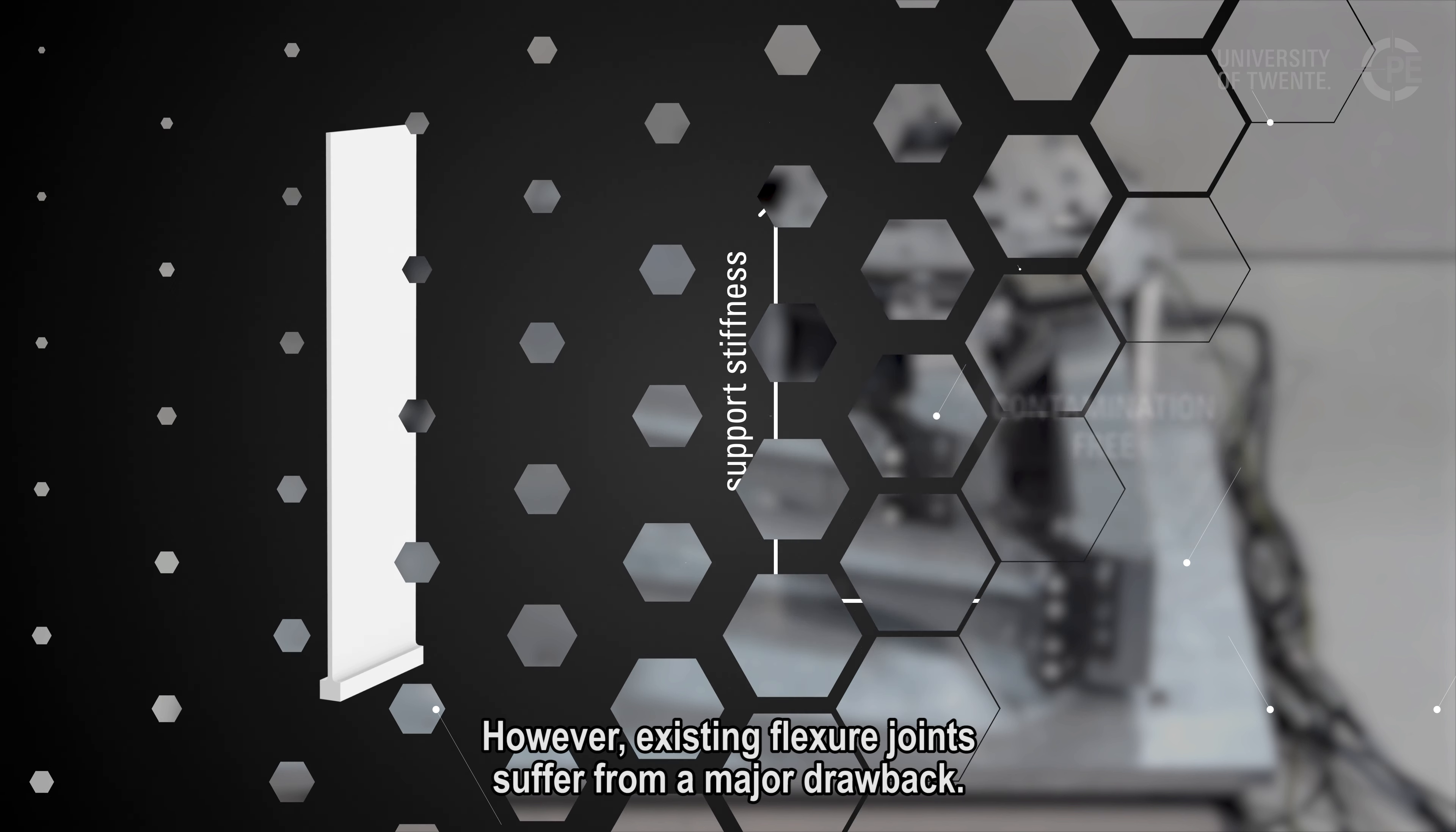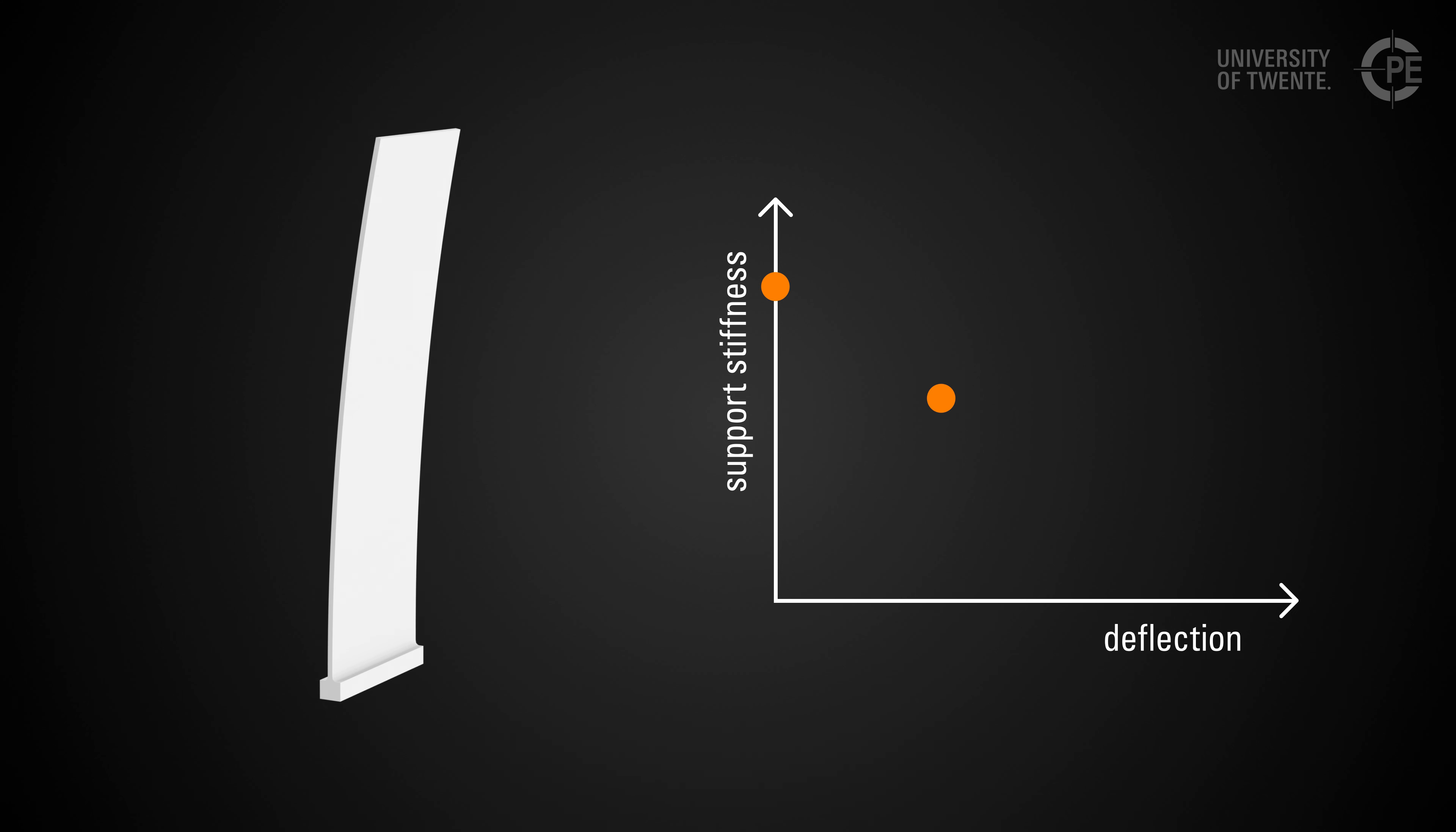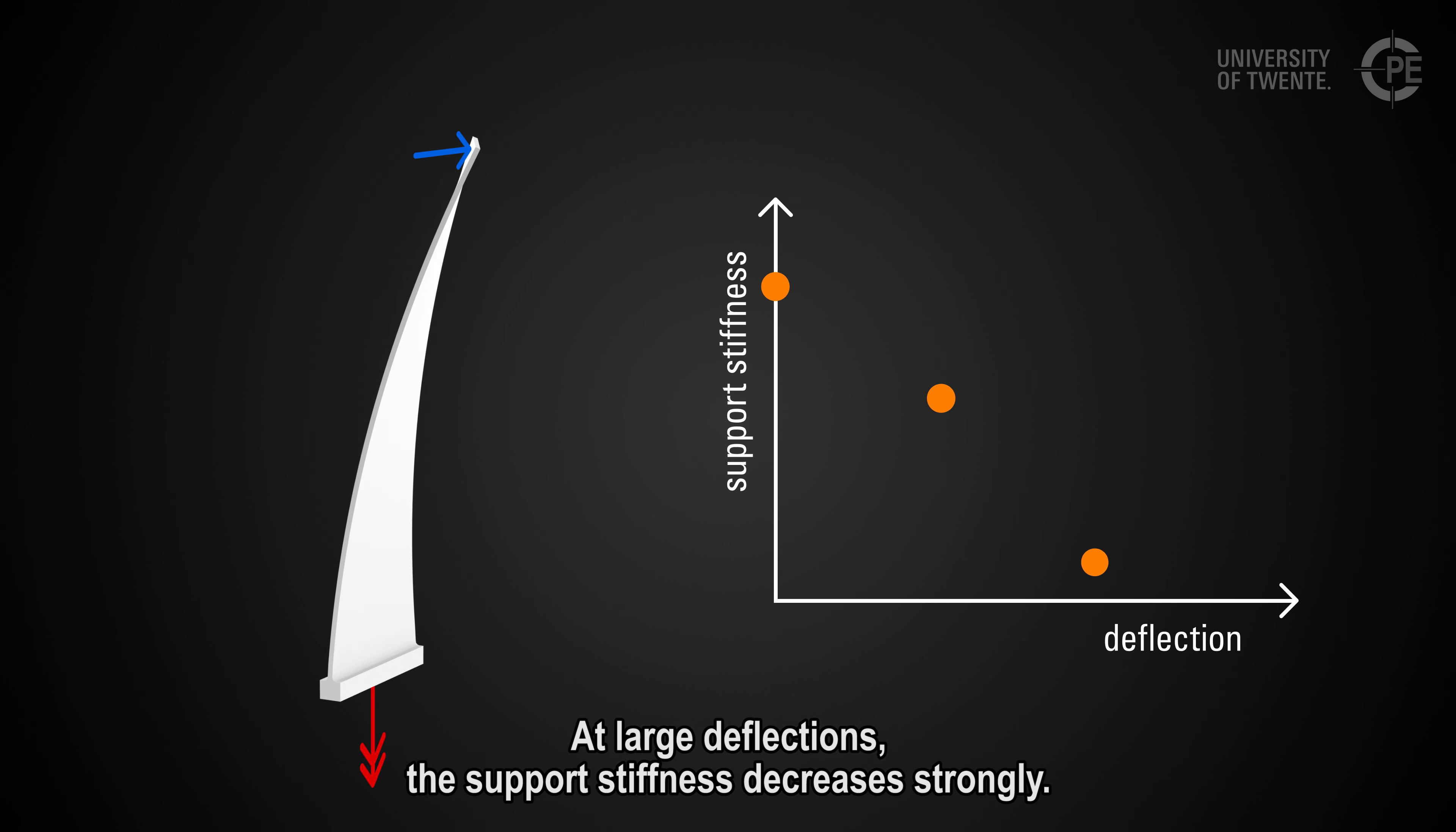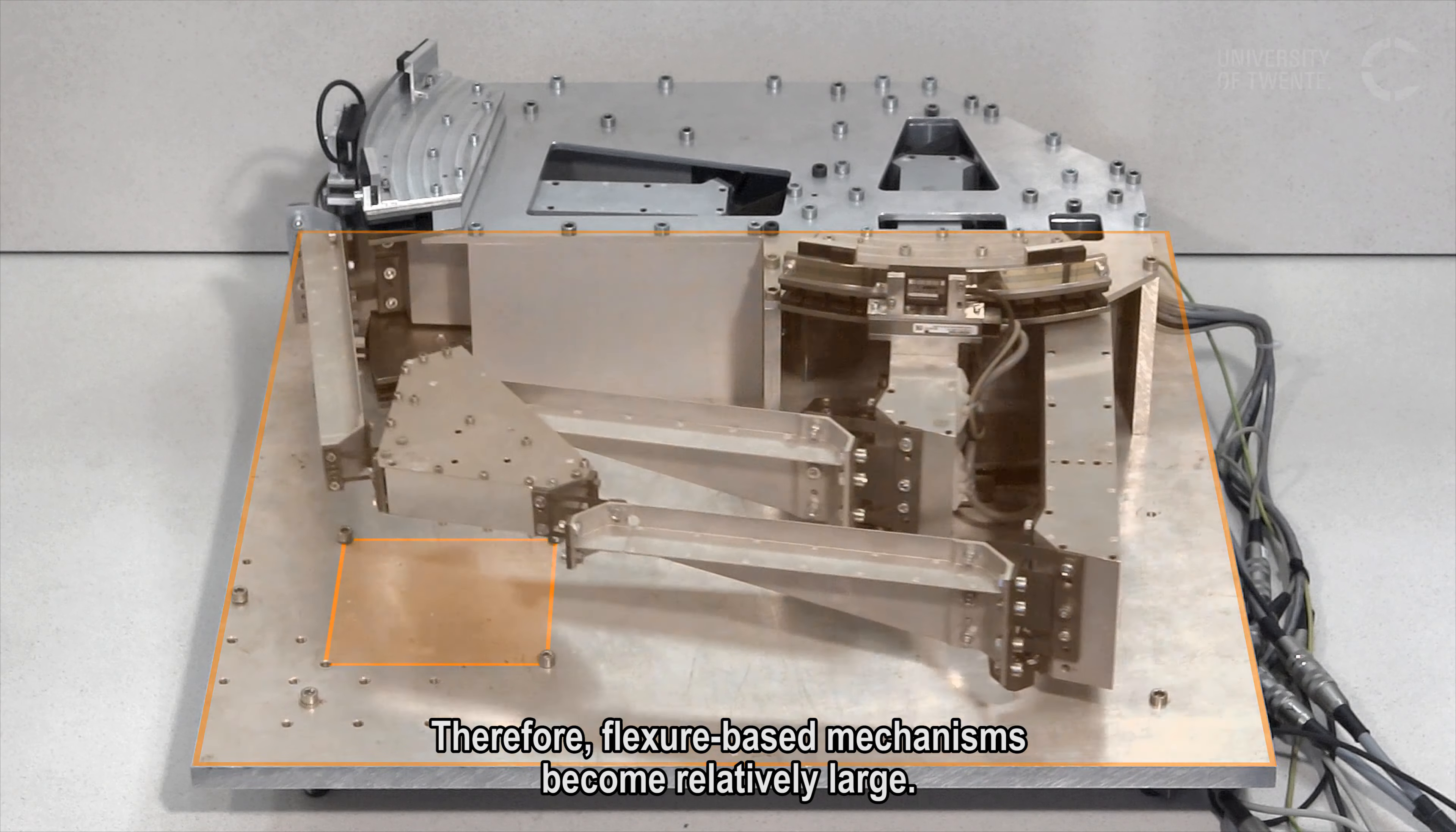However, existing flexure joints suffer from a major drawback. At large deflections, the support stiffness decreases strongly. Therefore, flexure-based mechanisms become relatively large.